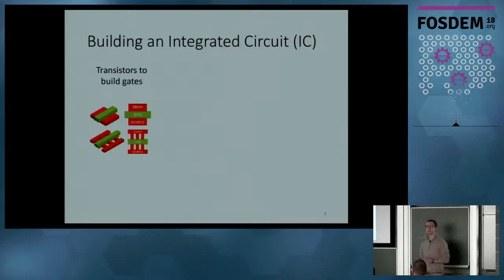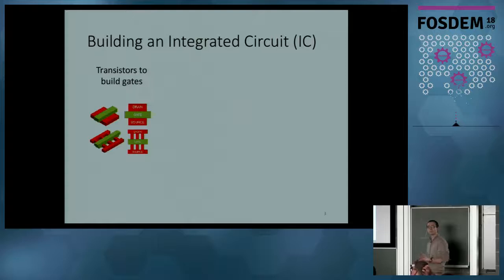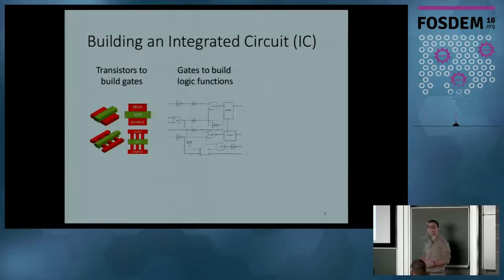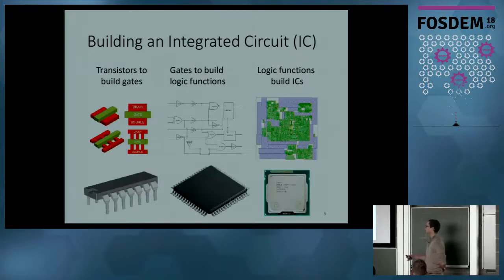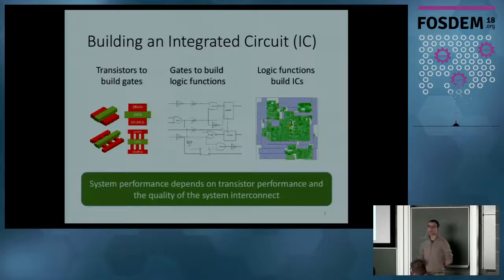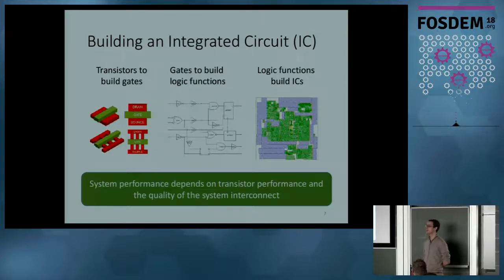Back to basics first. The most basic block is just a transistor that we'll pack together to make some logic gates. All the gates put together make some logic functions, and all the logic functions will make an IC, like Staff just explained a few minutes ago. After that, you can package them using whatever kind of package you want. What is important to guarantee the performance of your IC is that you have good transistors and a good quality interconnection system.